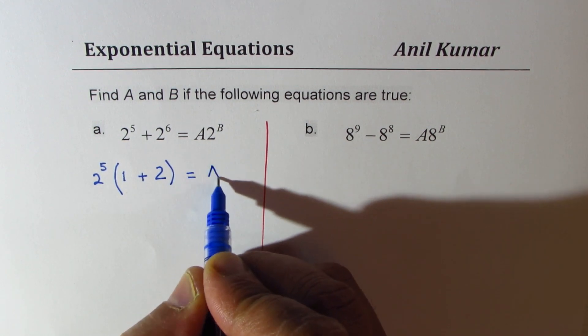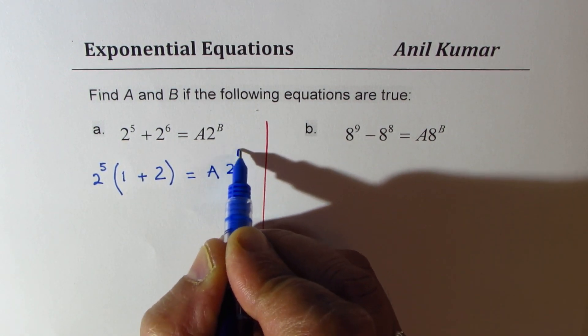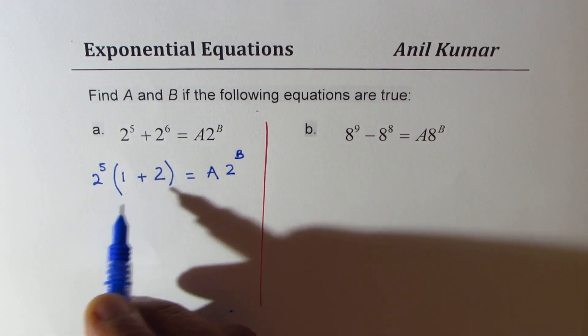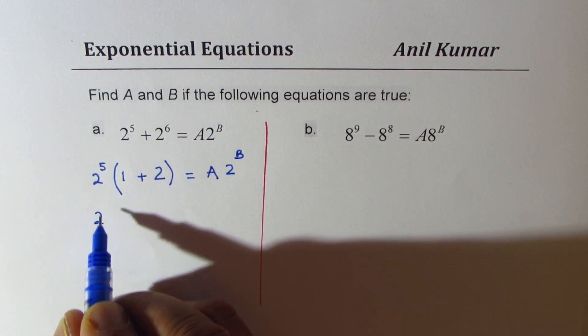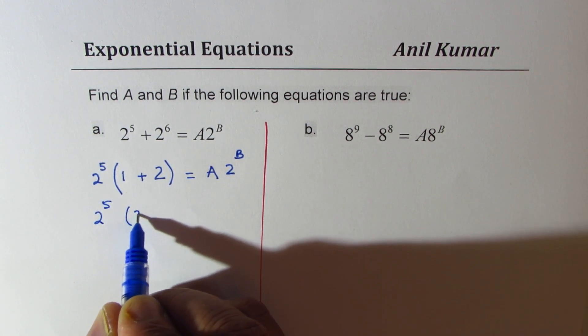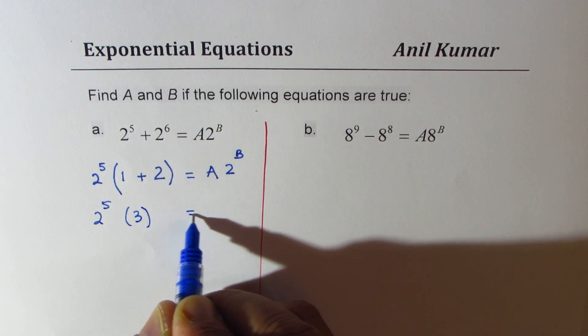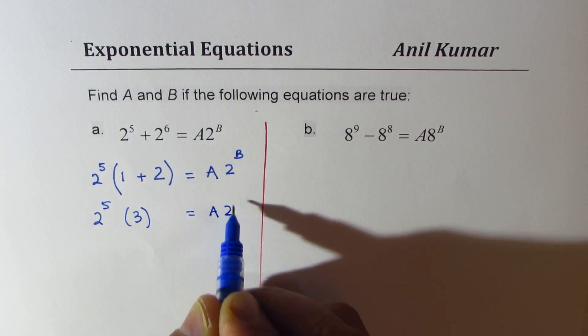On the right side, we have A × 2^B. Now look at this. It is 2^5 × 3 = A × 2^B.